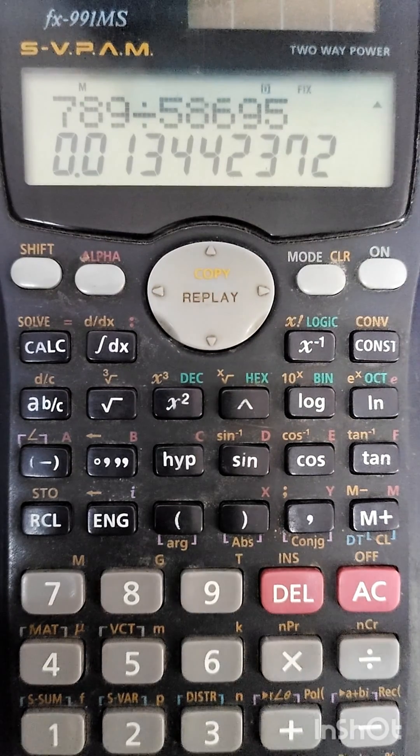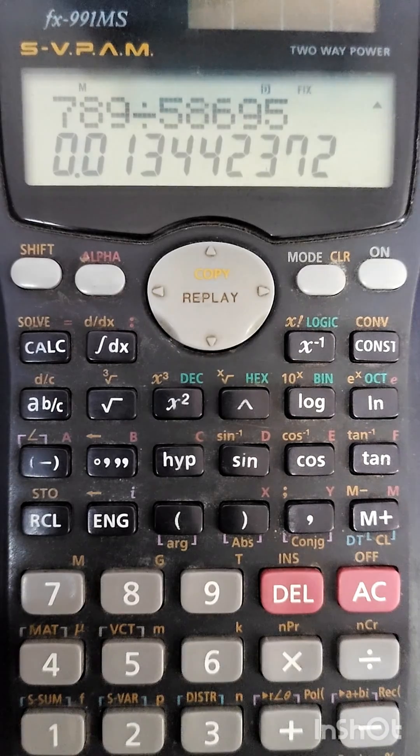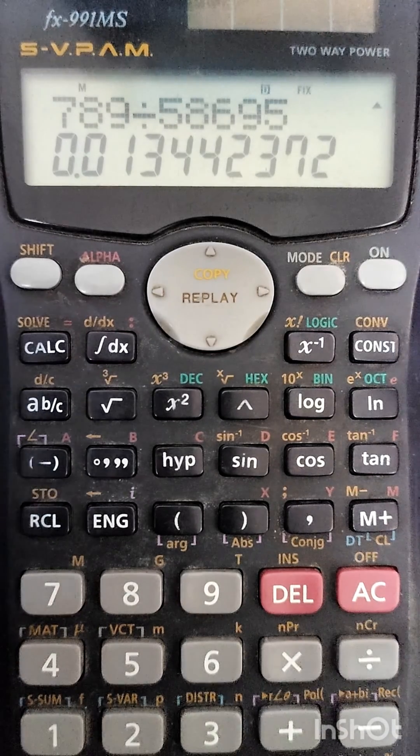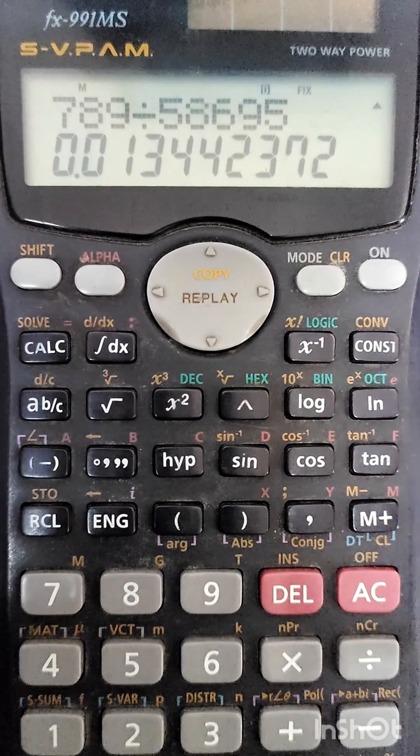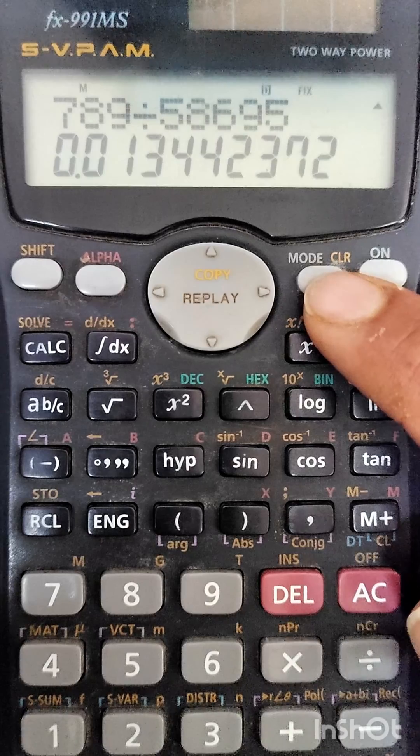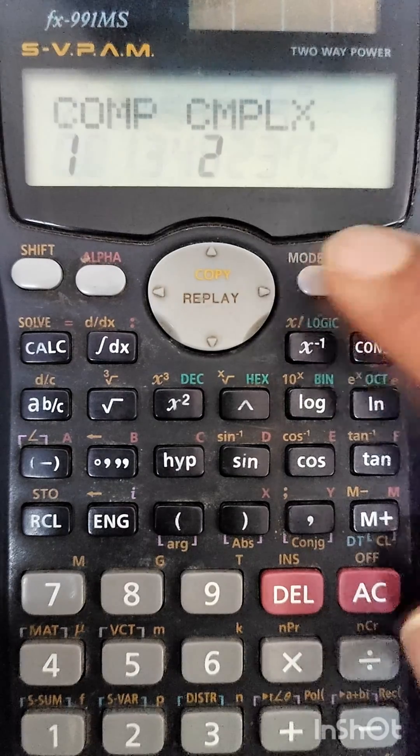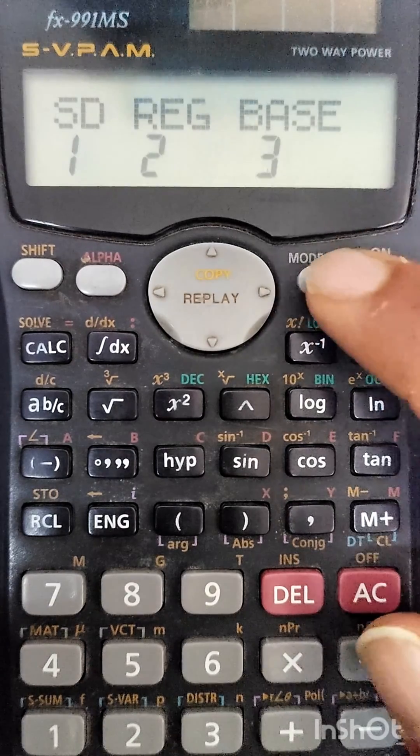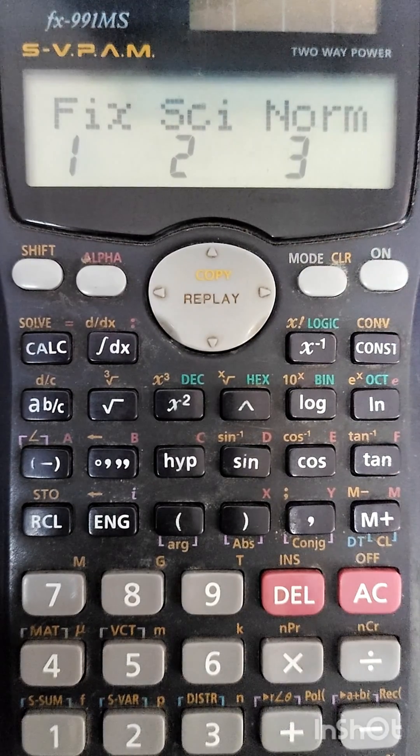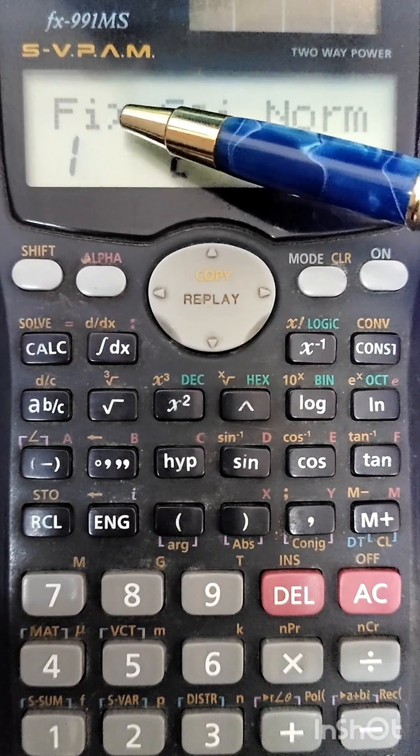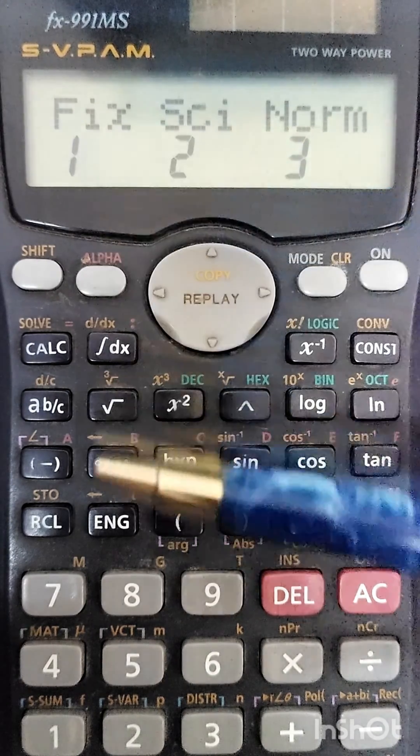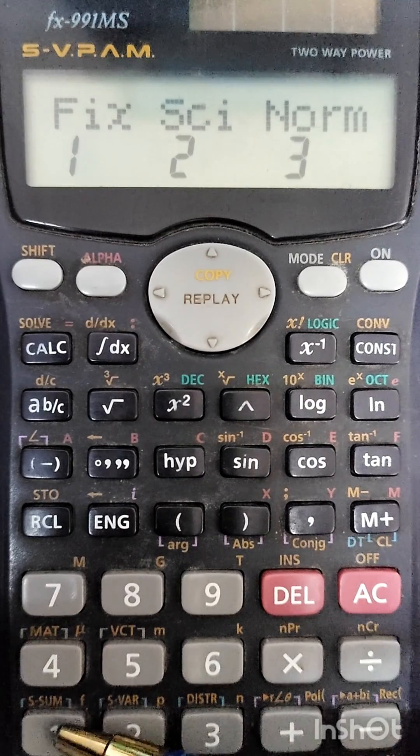In order to get only three values after a decimal, we have to set the calculator to three decimal places. For that, we will click this MODE button five times: one, two, three, four, five. On the fifth click, you will see that there is a term 'Fix' written, and below it we have '1' written. This means now we are going to click this one button.